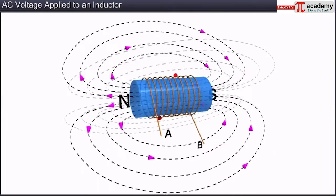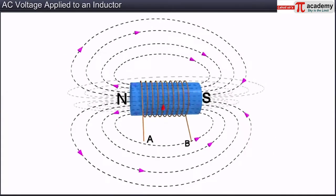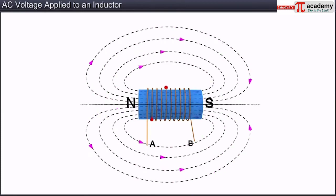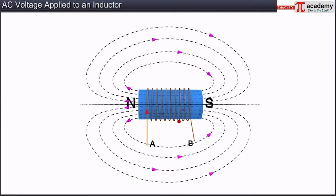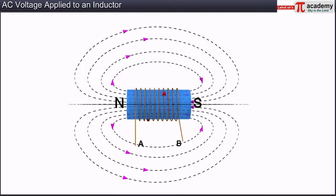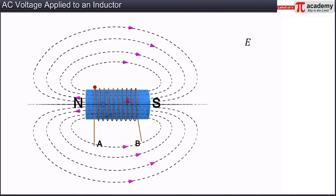An inductor resists any change in the current flowing through it. Any change in current through an inductor induces an EMF across it. This induced EMF is proportionate to the rate of change of current.